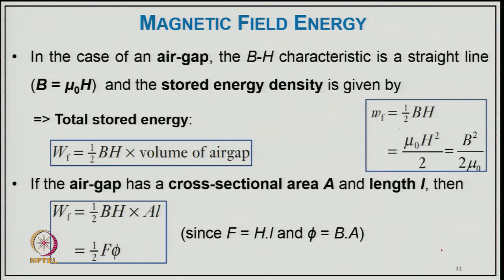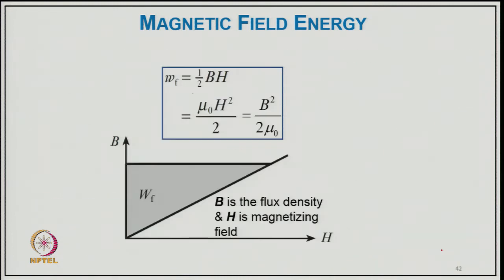For an air gap, the B-H characteristic is a straight line B = μ₀H, and the stored energy density is W_f = ½BH = μ₀H²/2 = B²/(2μ₀). Total stored energy is W_f = ½BH × (volume of air gap). If the air gap has cross-sectional area A and length L, then W_f = ½BH·AL = ½F·φ, where F = HL and φ = BA. The energy density W_f = ½BH = μ₀H²/2 = B²/(2μ₀) is represented by the area under the B-H curve in a linear magnetic circuit (no saturation). B is flux density and H is the magnetizing field in ampere-turns per meter.